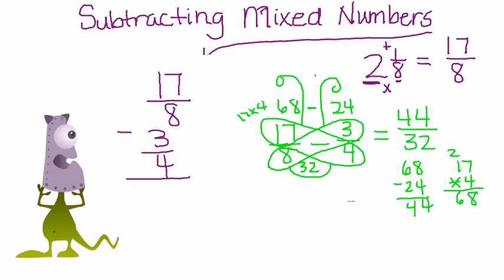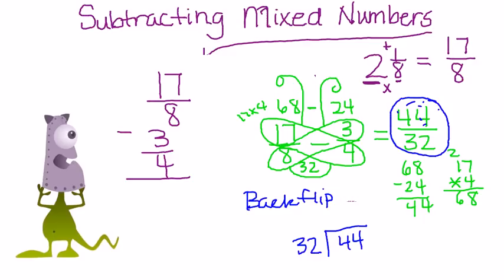Look what I notice. Improper. So we are going to have to convert that using the backflip to a mixed number. Remember, if it's raining, 44 goes in the house, 32 goes on the outside, 32 goes into 44 one time, leaving us with our subtraction here of 12. So 12 is the remainder, and the slices are cut in 32nds.